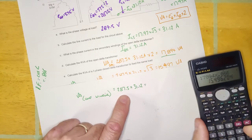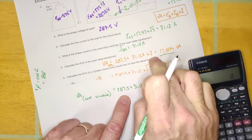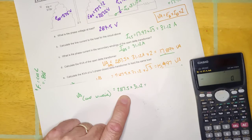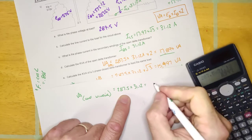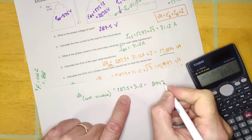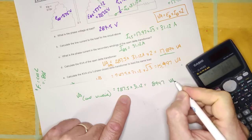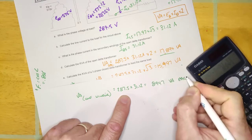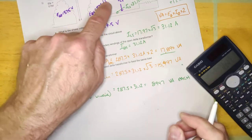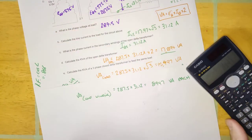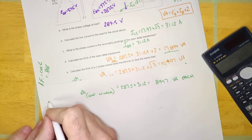So let's calculate that. Should be exactly half of 17 because we multiplied by two there. So 287.5 times 31.12 equals 8,947 VA each. The two transformers that make up the open delta transformer. So this is open delta.